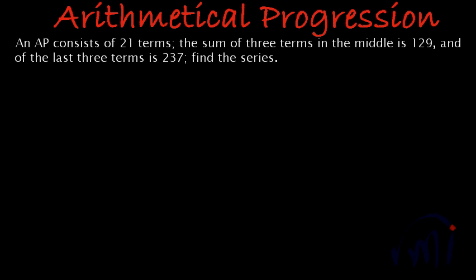Hi, so in this series on Arithmetical Progression, today we are going to solve a slightly difficult problem. The problem statement says: an AP consists of 21 terms. The sum of three terms in the middle is 129 and of the last three terms is 237. Find the series.